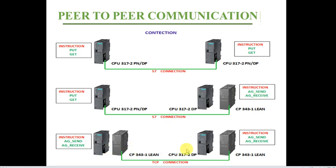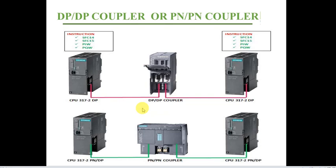The third layout is where neither PLC has a Profinet port, so we use a communication processor module on both sides to share data. The instructions used are AG_SEND and AG_RECV for both sides, and the connection type is TCP.